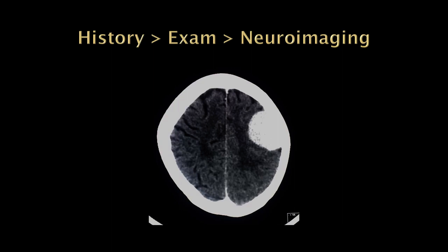If we're prioritizing the history, the neurologic examination, and neuroimaging, I would say history is almost always the most important thing for making a diagnosis. Usually if I don't know what's going on after taking a history, that's a problem. It's not very often that the exam suddenly brings something out, though that occasionally happens.